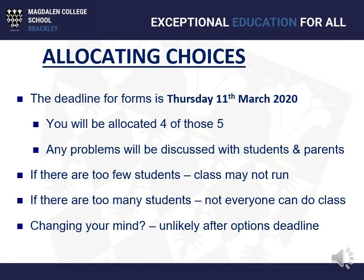We do ask you to put down five choices, not four — five. You may want to think of the fifth one as a reserve, but you will be allocated four of those five subjects and you've got to be happy to study all five. Don't think that just because you put something number one you'll automatically get that. For example, if 93 people chose history as their first subject and classes have a maximum of 30, three people won't fit. My job is to make sure the biggest number of people — the majority — can get four of their five subjects. That's the number one priority.